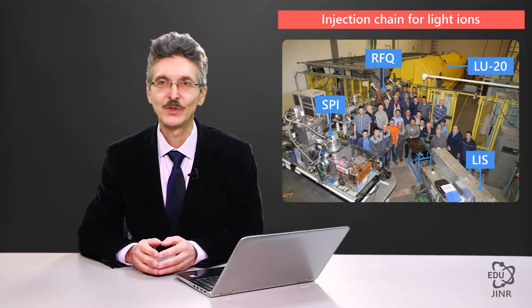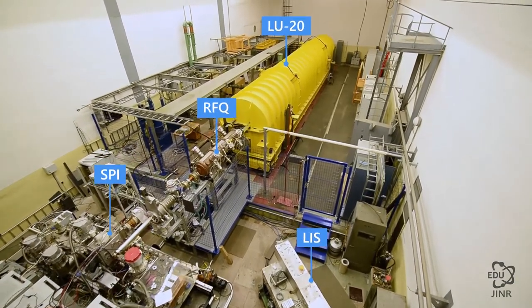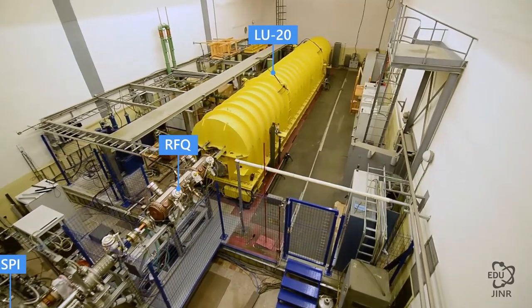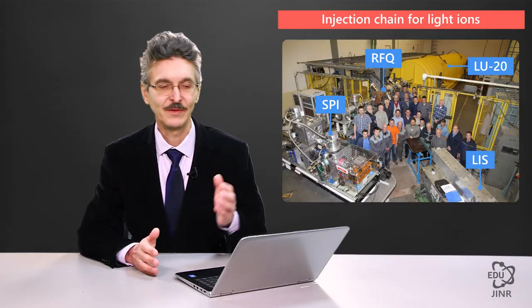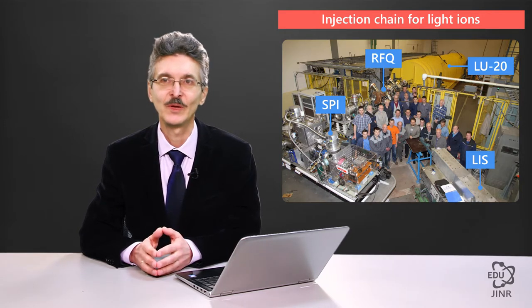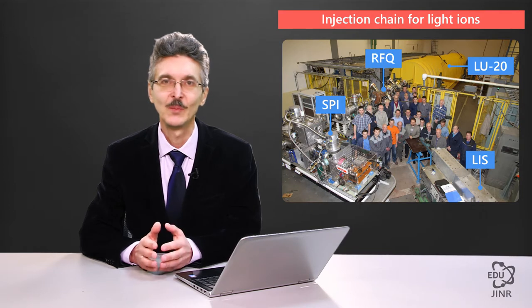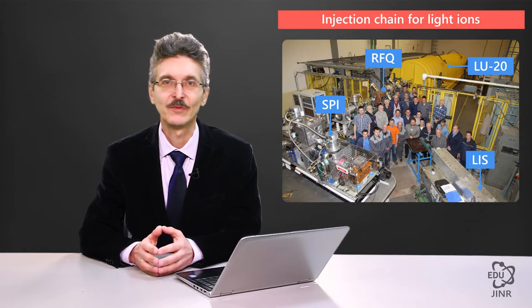The light ion injection chain includes an array of sources, a small high-frequency resonant accelerator with spatially homogeneous quadrupole focusing, and the Alvarez accelerator. In this picture, you can see the solemn ceremony of the commissioning of this accelerator in May 2016, when the entire injection chain was assembled in its present form. You can also see the polarized ion sources, which are a complex engineering and physical facility where the production of polarized nuclei is divided into three stages.